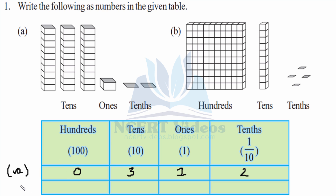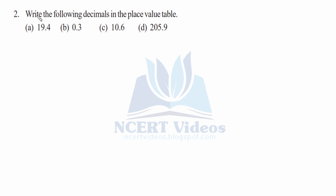In part B we have hundreds: one hundred. Tens: we have one. Similarly, ones: we don't have any ones, so we write zero. Tens: we have four tens. So that completes question 1.